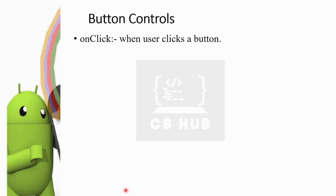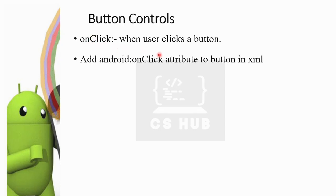If you want to use an event or initiative, you can use the button. You can use the activity. There are different methods to handle button click events. First, add android:onClick — this parameter is an attribute of the button in XML.